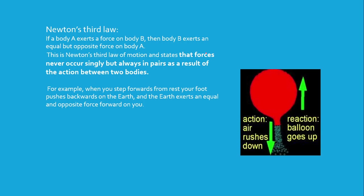Newton's third law states that if body A exerts a force on body B, then body B exerts an equal but opposite force on body A. Often stated as 'every action has an equal and opposite reaction,' this law says forces never occur singly but always in pairs as a result of interaction between two bodies. For example, when you step forward, your foot pushes backward on the earth, and the earth exerts an equal and opposite force forward on you.